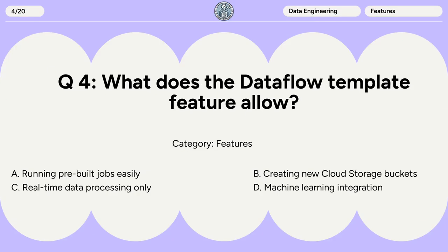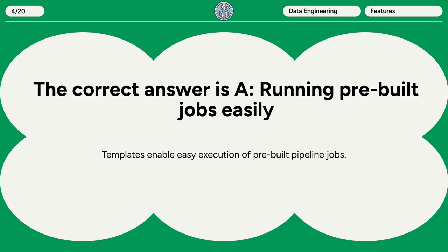Question 4: What does the Dataflow template feature allow? A. Running pre-built jobs easily. B. Creating new cloud storage buckets. C. Real-time data processing only. D. Machine learning integration. The correct answer is A. Running pre-built jobs easily. Templates enable easy execution of pre-built pipeline jobs.